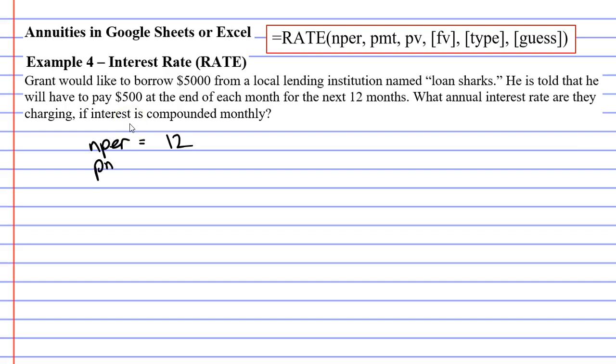Next we need to find PMT, which is the repayment, and Grant pays $500 each month, so PMT is $500.